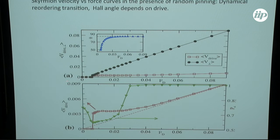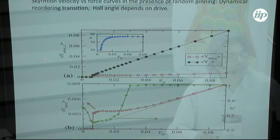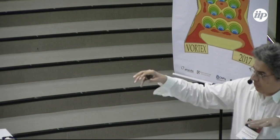So this is some work we did a few years ago. So this is the skyrmion velocity versus applied drive for a 2D simulation with random pinning.